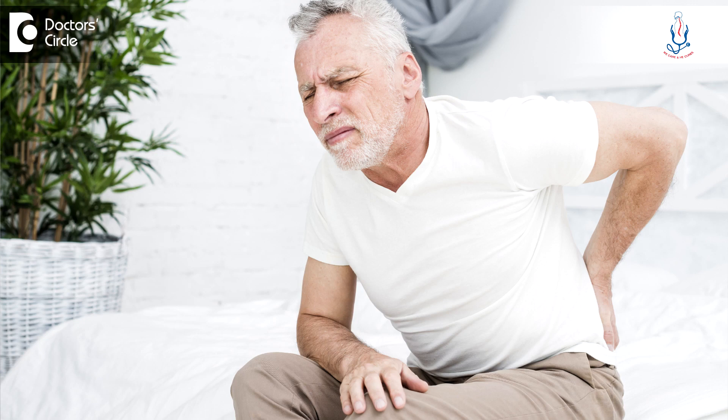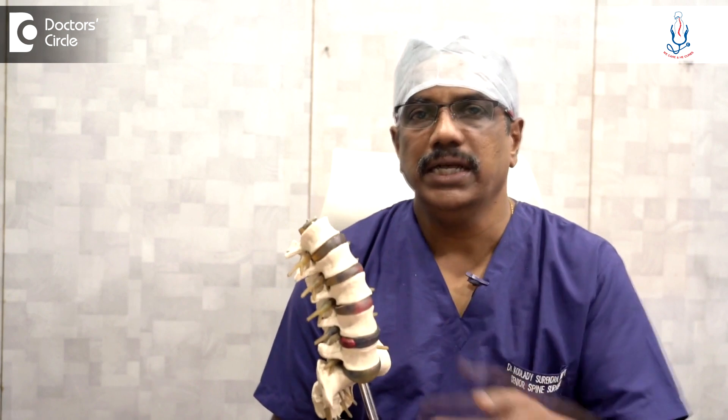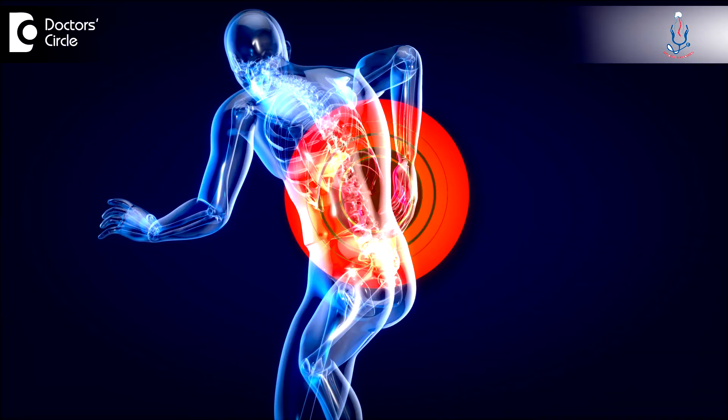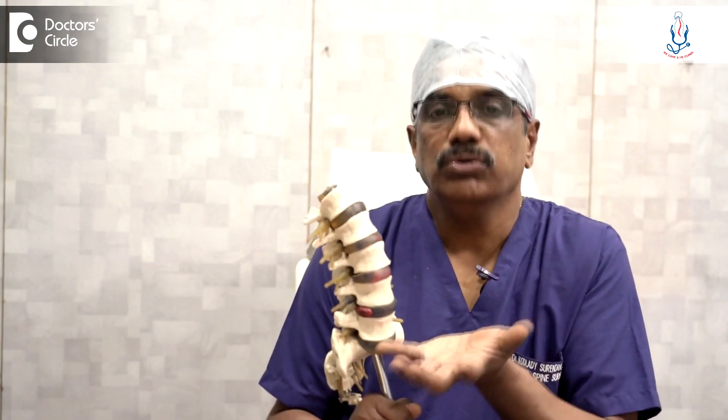When it becomes weak, it degenerates — it becomes aged or weak — and eventually it collapses. The normal disc is meant to take the load of the body, but a degenerated disc cannot take that load. That is why it collapses.